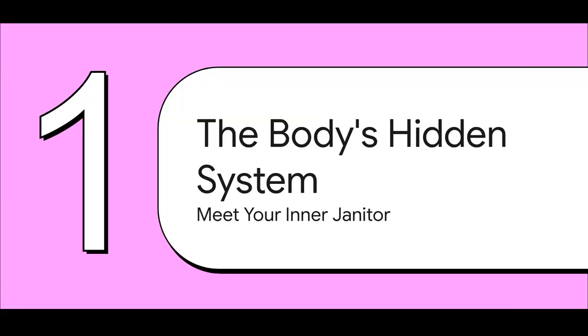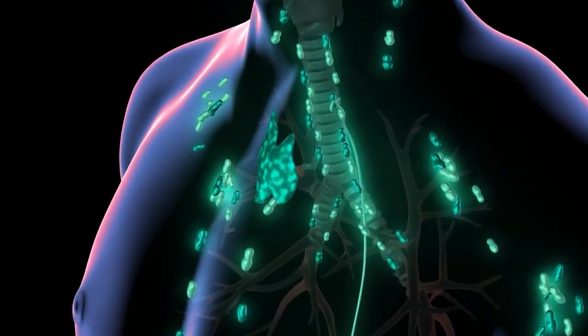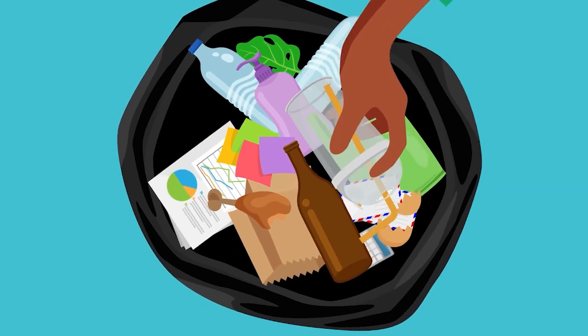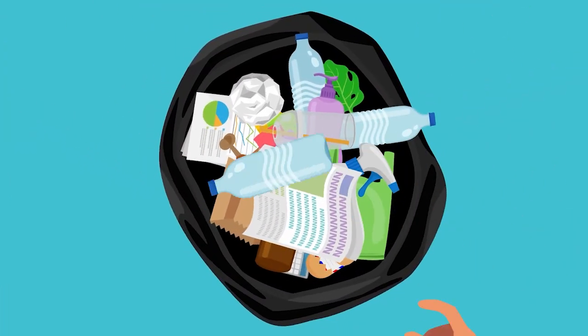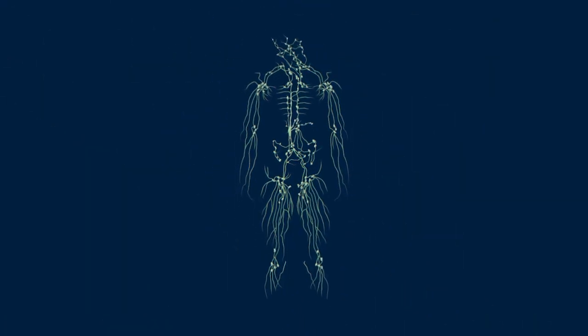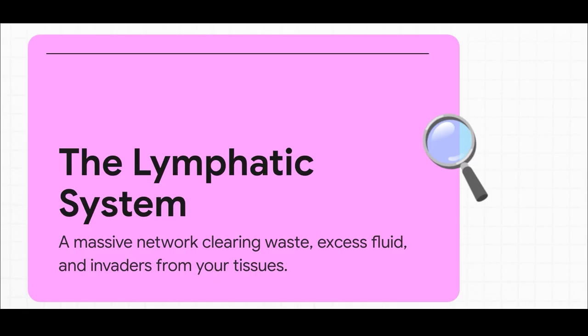We are talking about your lymphatic system, and probably the best way to think about it is like this. It's your body's own internal janitor. It's the cleanup crew that's constantly taking out the trash and running surveillance. Look at this. It's a massive, sprawling network of vessels that runs through your entire body. Its job is to collect all the cellular junk, extra fluid, and check for any invaders, like bacteria or viruses. It's absolutely crucial for keeping you healthy.